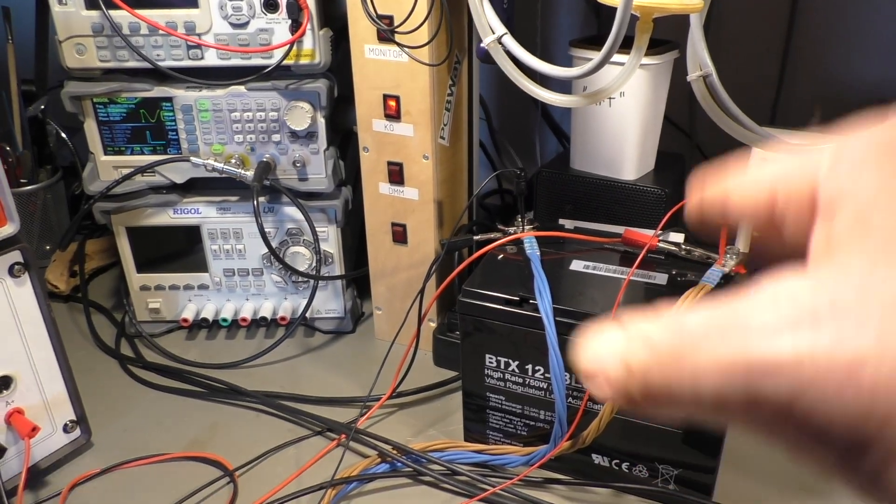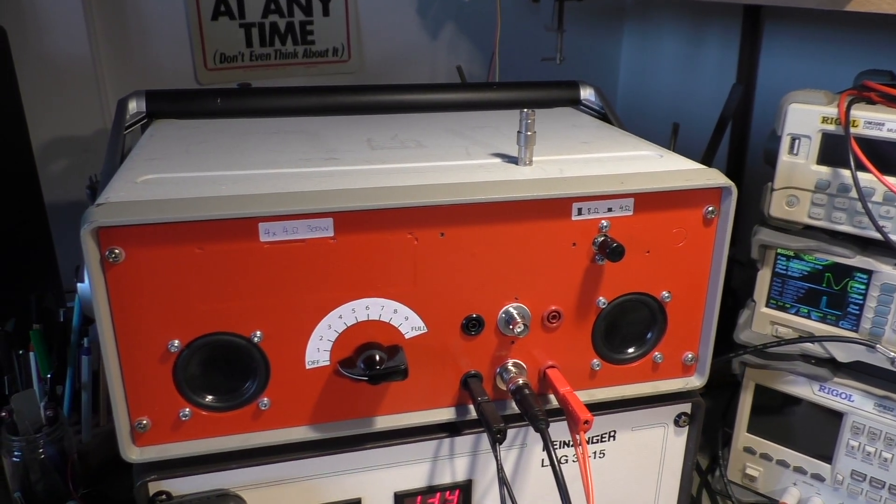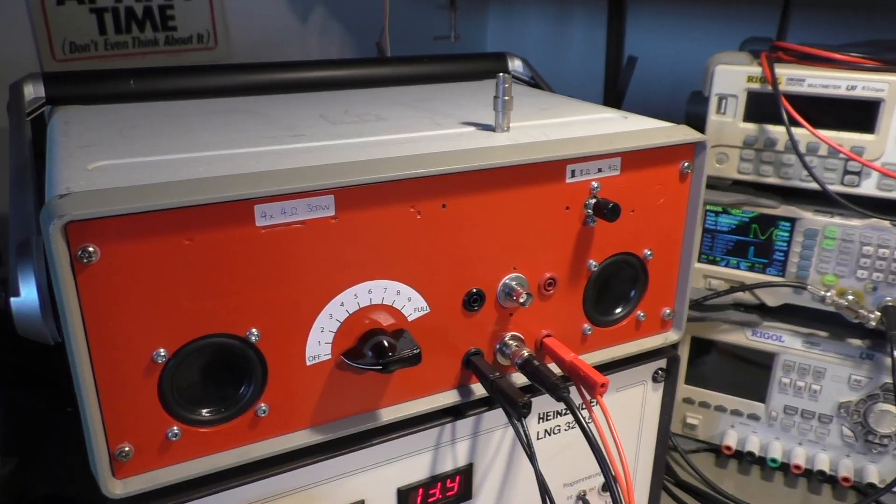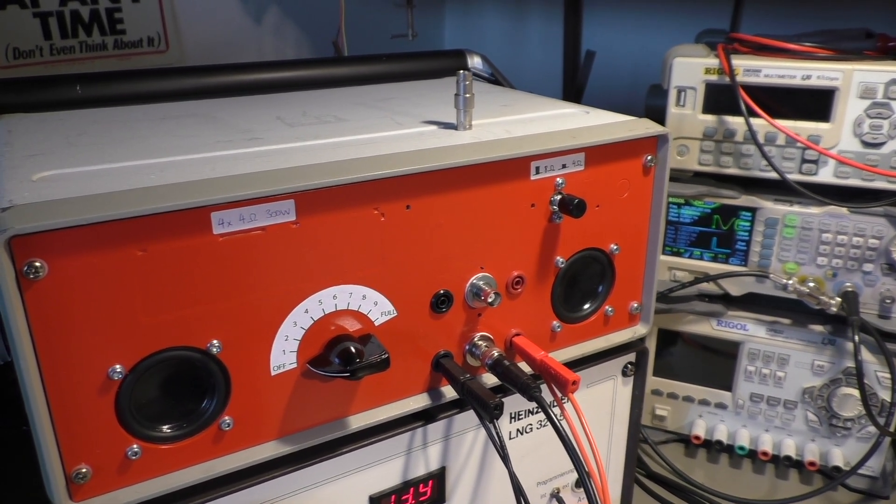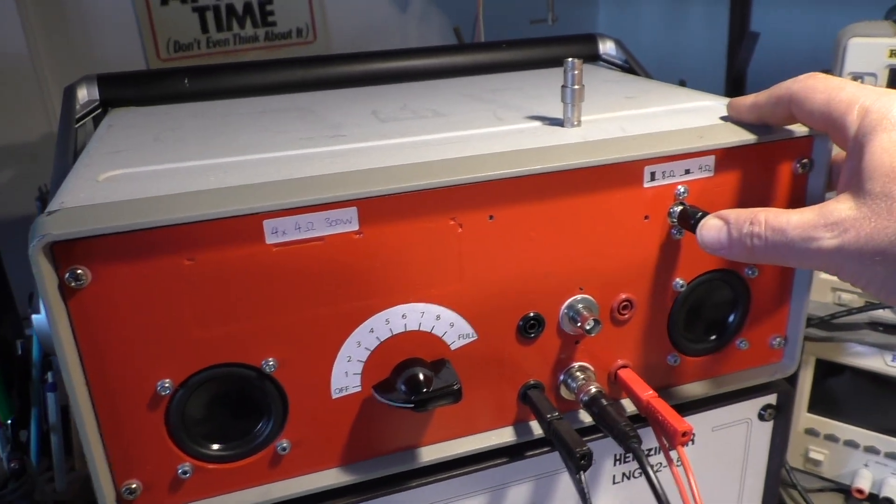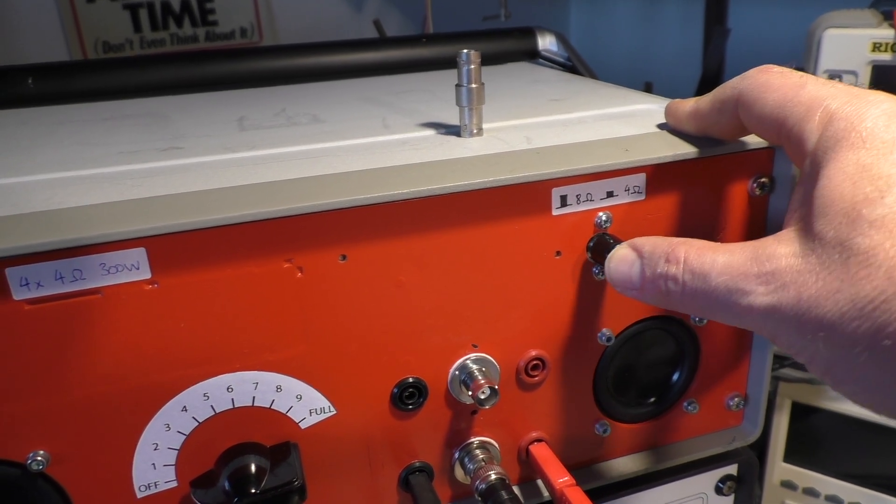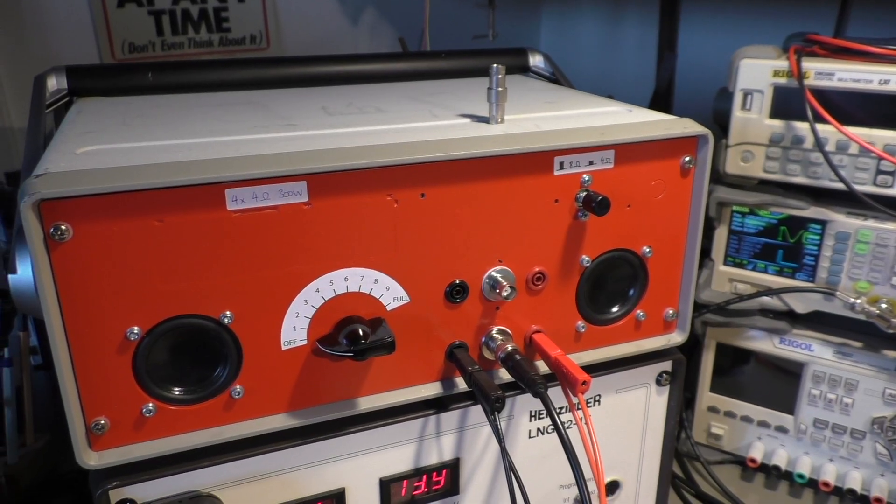The battery is the main supply for the amplifier. Then I have here my new self-made power load. It simulates speakers. You can switch it from 8 ohm to 4 ohms. It has four large 4 ohm resistors inside, two for each channel.